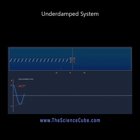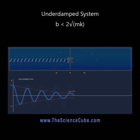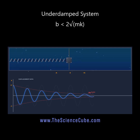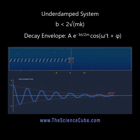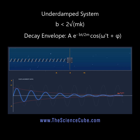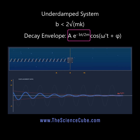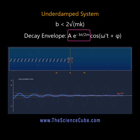Now submerge it in water. Resistive forces appear. Here B is small — specifically less than the critical value 2 times the square root of mk. The system still oscillates, but the amplitude decays exponentially over time. This is underdamping.